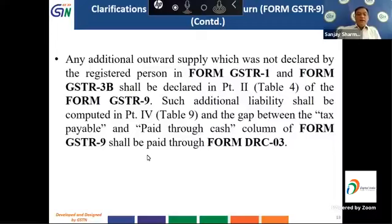Any additional outward supply not declared in GSTR 1 and GSTR 3B shall be declared in Part 2 (Table 4) of GSTR 9. Such additional liability shall be computed in Part 5 (Table 9), and the gap between tax payable and paid through the cash column of GSTR 9 shall be paid through form DRC-03.